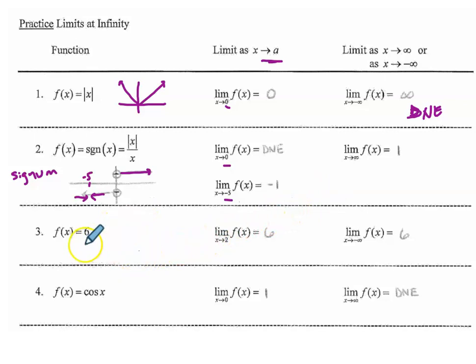The next function is just a horizontal line at y equals six. And so the limit at any place on a horizontal line is the value of the line itself. And that means as you go to infinity or negative infinity, the limit will also be the value of the line.